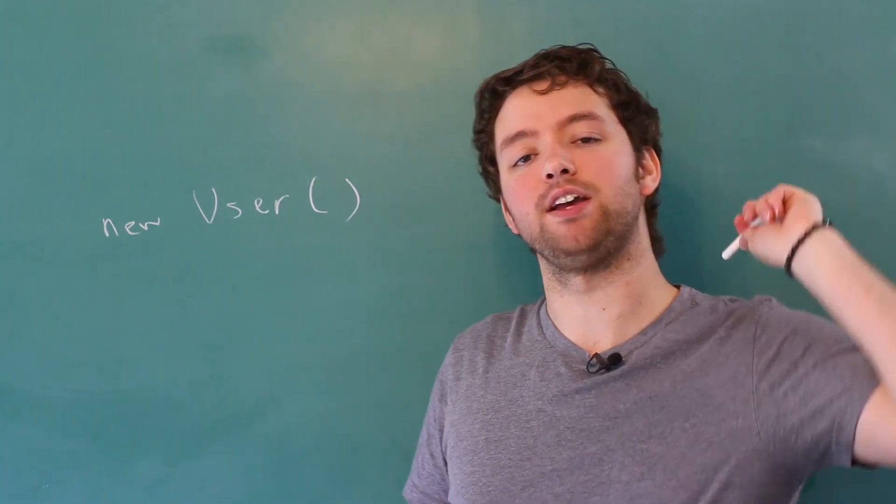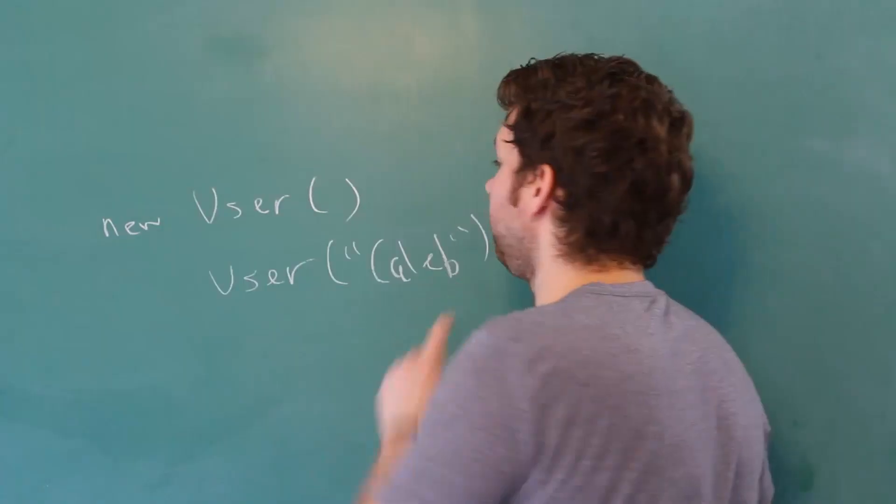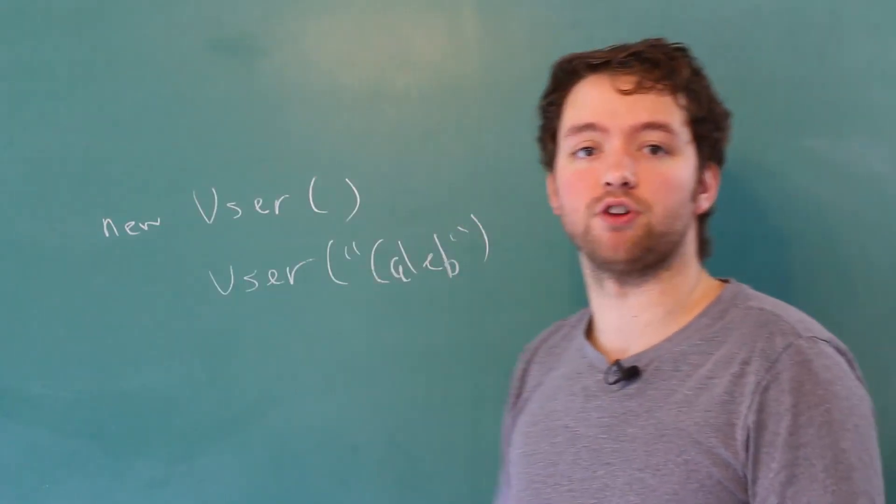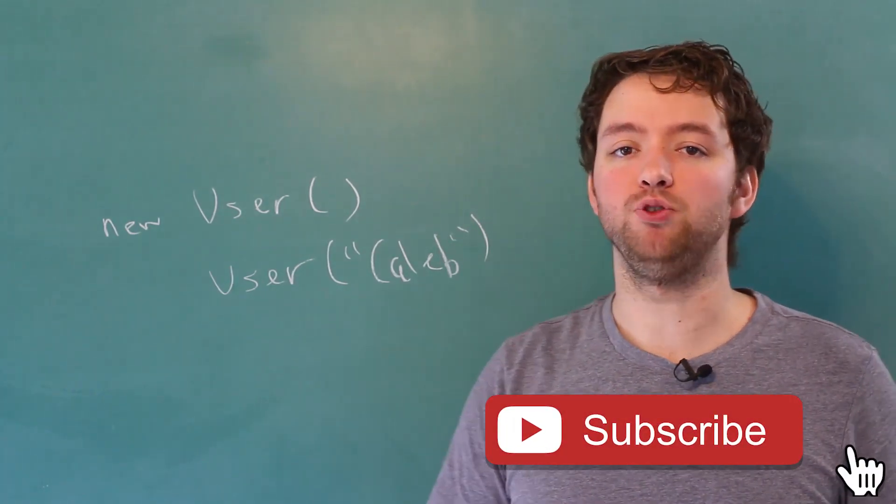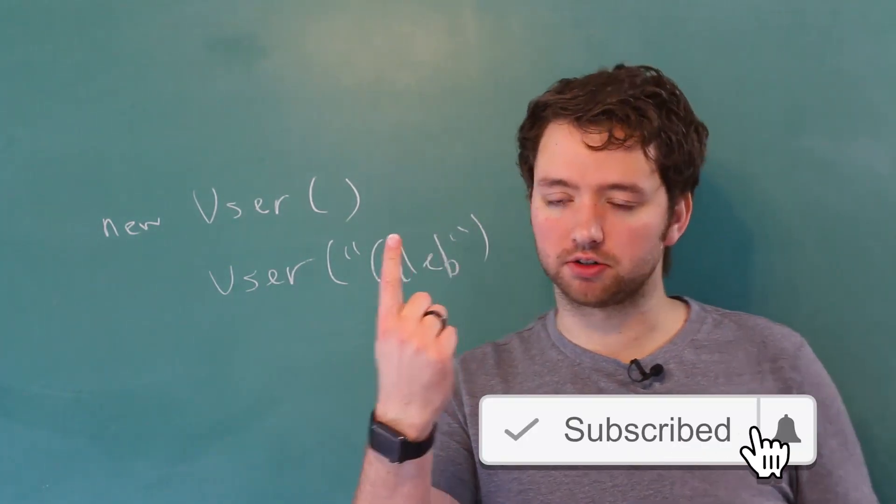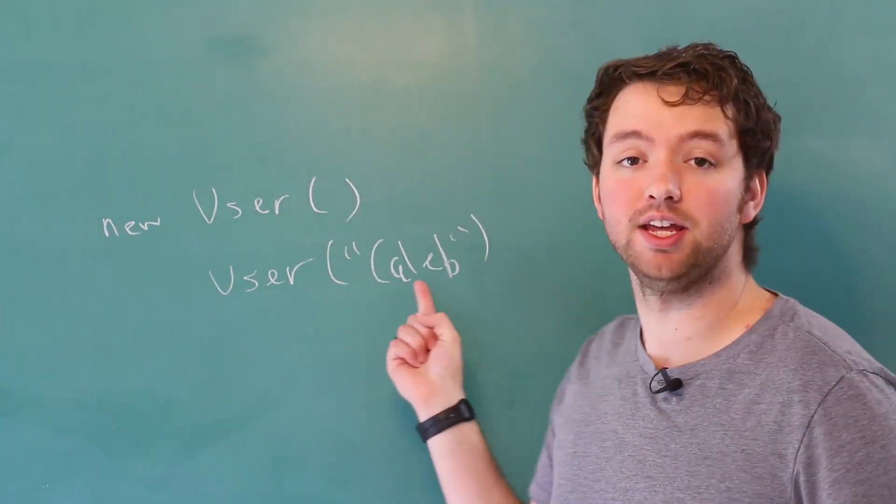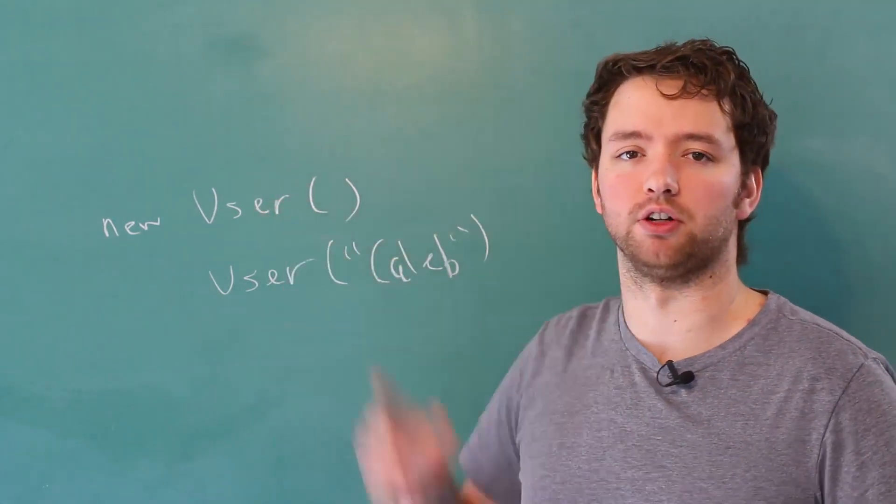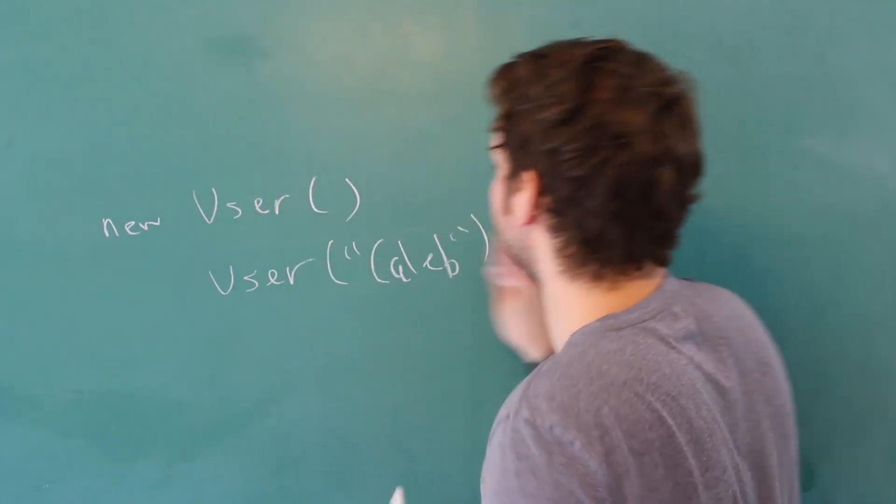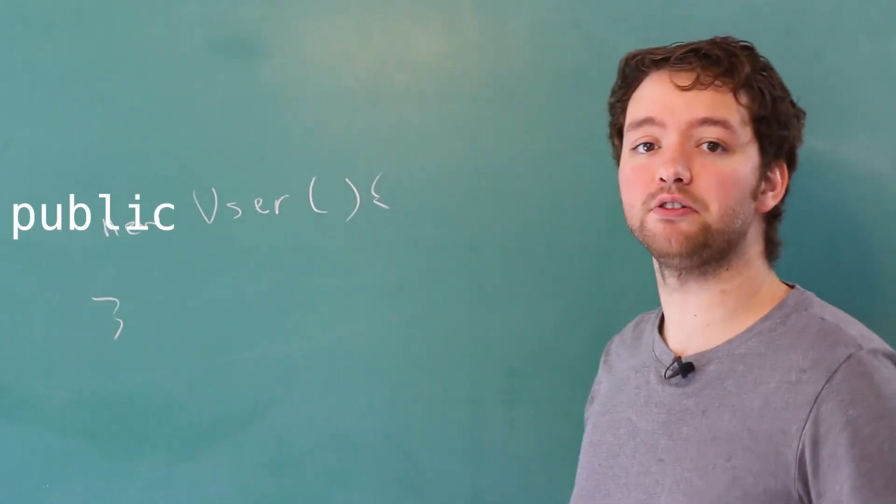But if you create a custom constructor, such as one that takes a string, the definition of this default constructor is no longer going to implicitly happen. So in our class, if you want the option for a default constructor with no arguments passed in and a custom constructor where we pass something in, you're going to have to explicitly define that default constructor, which literally will just look like this. Super easy, you just got to remember that.